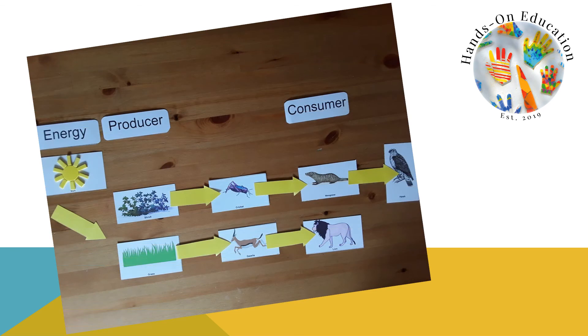For your hands-on activity, use pictures to show different food chains in the Sahara Desert. Think about where the energy comes from, how plants grow and the order in which animals and plants are eaten.